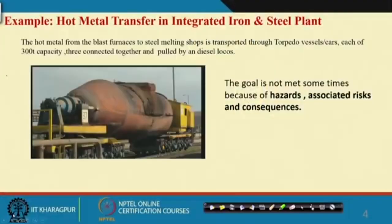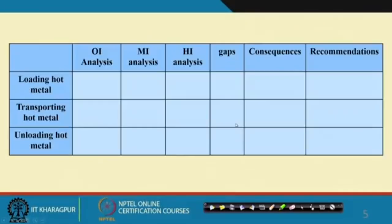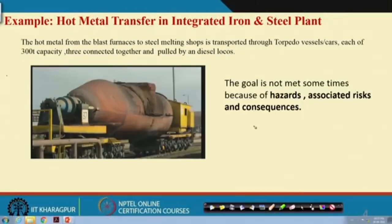Let us look at this in a steel industry example. In an integrated steel plant with a capacity of 4, 5, or 6 million tons, they produce 10,000 to 20,000 tons per day.